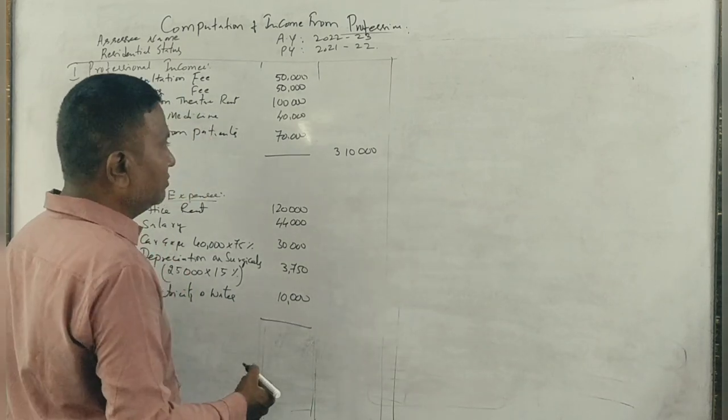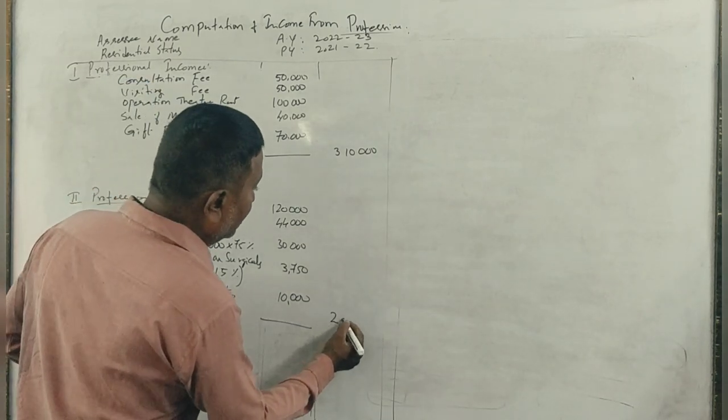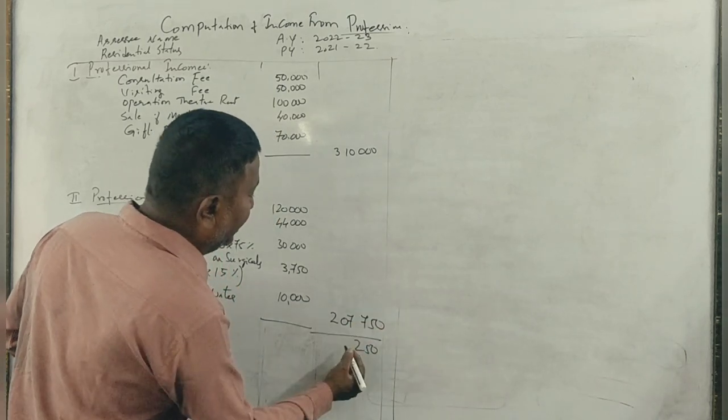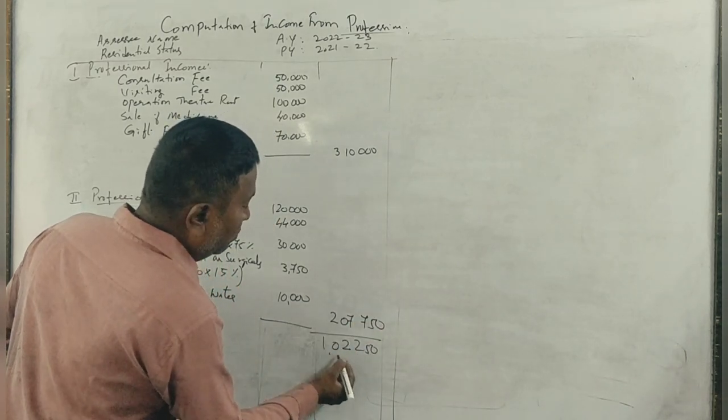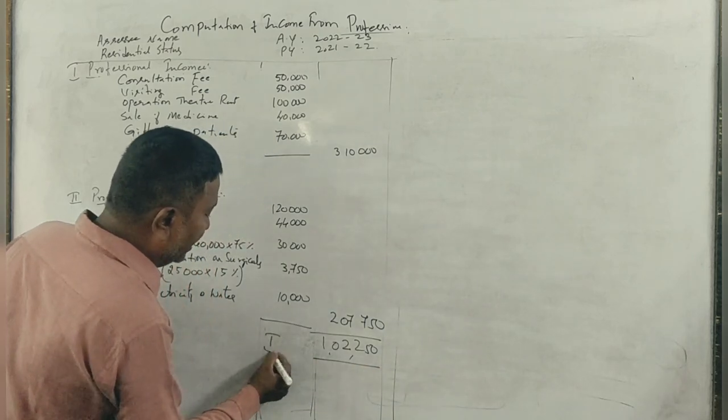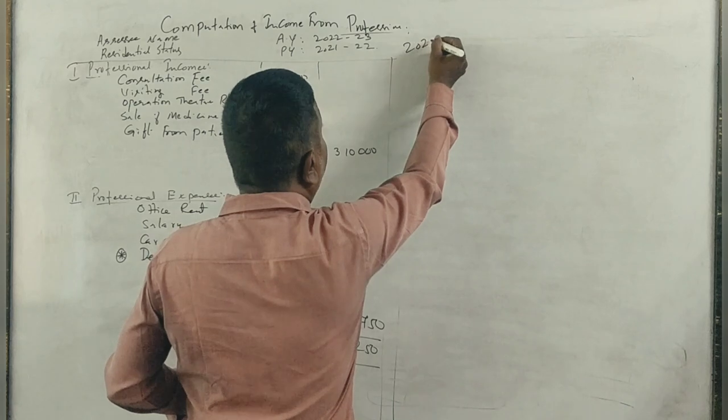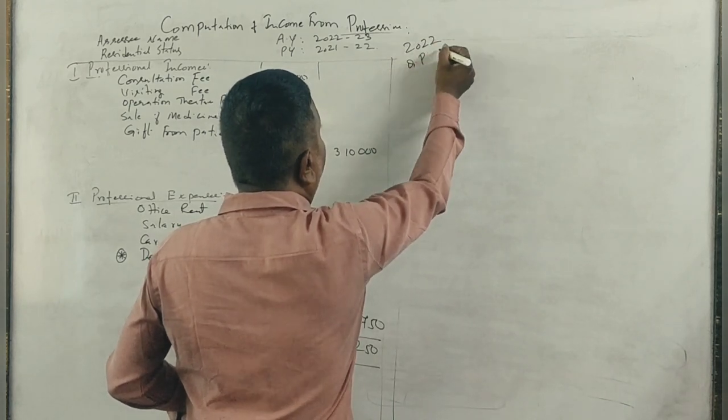2,750,000. I'll get 1,250,000. 1,250,000. Income from profession. This is 2022 question paper. Five marks.